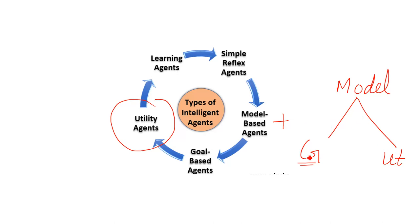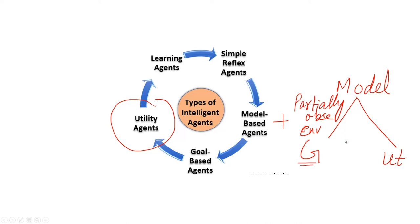Another important point: goal-based and utility-based agents both work in a partially observable environment, meaning the agents do not have full information about the environment. For example, suppose you are going from Toronto to Montreal — you know the route, but you do not know how many cars, trucks, or bikes will be on the road. That is called a partially observable environment.